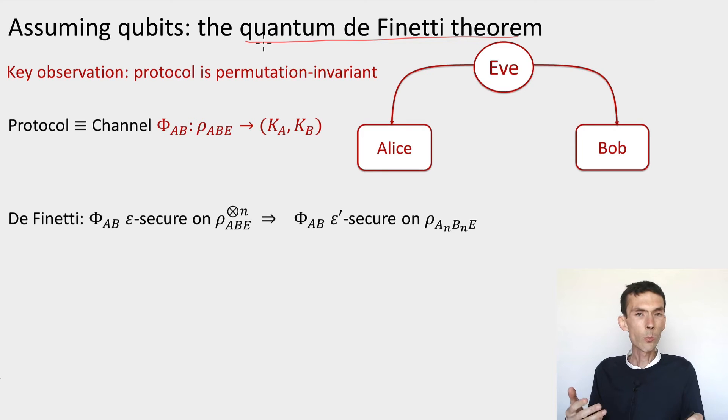And in general, I don't know anything on the dimension of these states, so I can't apply this de Finetti theorem. But still, just because it's a generally powerful tool, I want to tell you a little bit about it and show you how it would be used if we knew a bound on the dimension of the systems. So the main observation that's needed in order to apply this theorem is that the protocol has very strong symmetry.